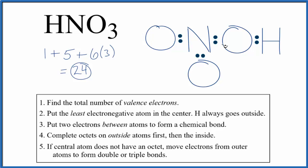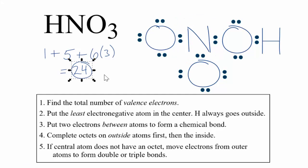Let's complete the octets on the oxygens. All of the atoms on the outside are okay. Hydrogen has two, that's good. Each oxygen has eight. The central nitrogen, though, only has six and we've used all 24 valence electrons.